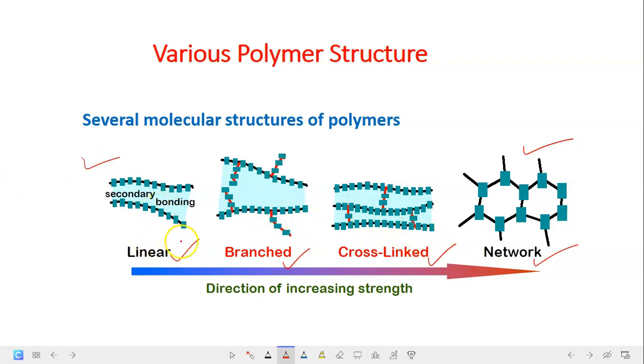So for the linear polymer, this is where the repeat units are joined together end-to-end in single chains. As for the branched polymers, you can see that the side branched chains, they are actually connected to the main one. And for the cross-linked, the linear chains, the adjacent linear chains.